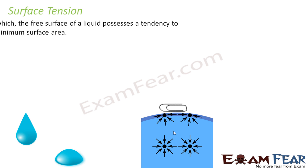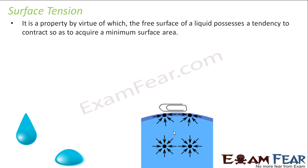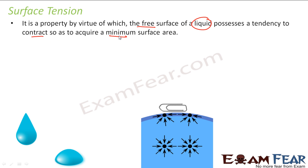So what is surface tension? Surface tension is the property of a liquid by the virtue of which the free surface of the liquid tends to contract so as to acquire minimum surface area.